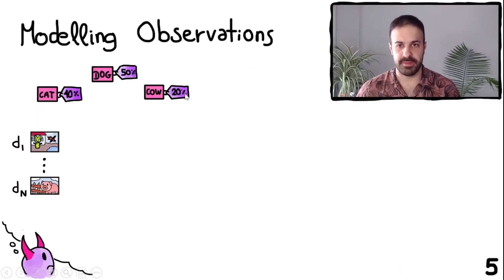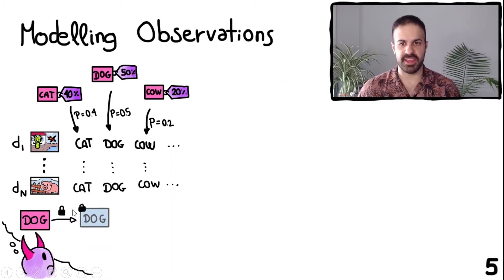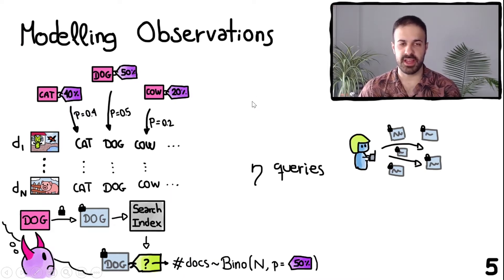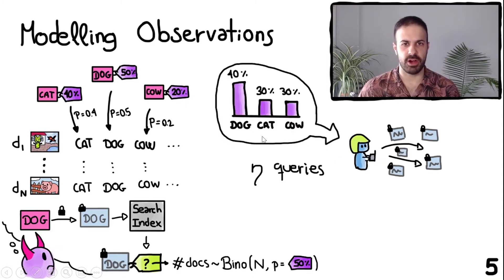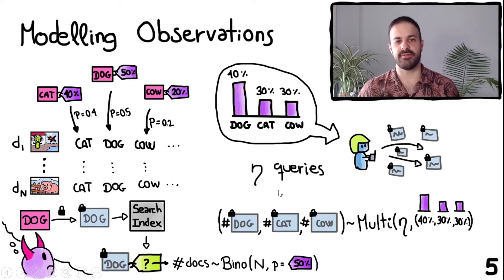Our attack uses the following mathematical model to help match query tokens to keywords. Given auxiliary information about the probability that a keyword appears in a document, the model assumes each document in the dataset has a particular keyword independently of all other documents and keywords. This implies that when Alice queries for the keyword 'dog,' the number of documents matching the query follows a binomial distribution whose probability is given by the auxiliary data — in this case 50%. The model also assumes the user's queries are independent and follow probabilities given by the auxiliary information, so the number of times Alice queries for each token follows a multinomial distribution. We note that this model is just a tool to derive our attack and we do not generate the dataset or queries following this model in our experiments.